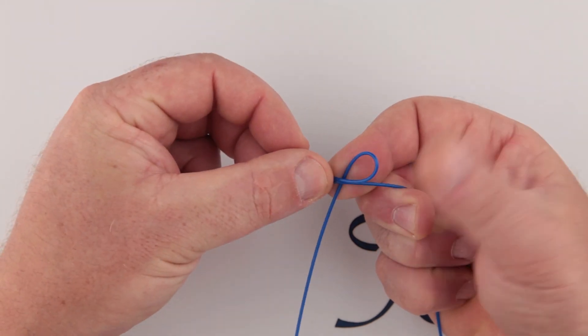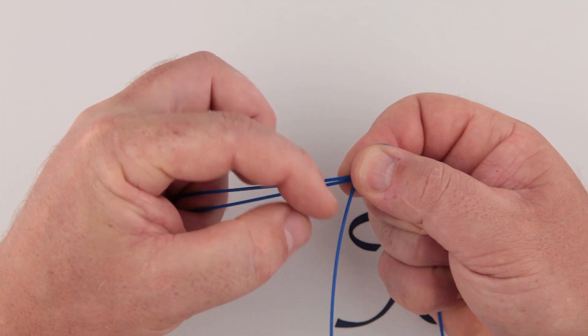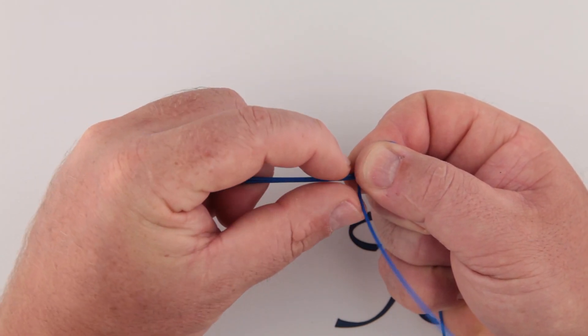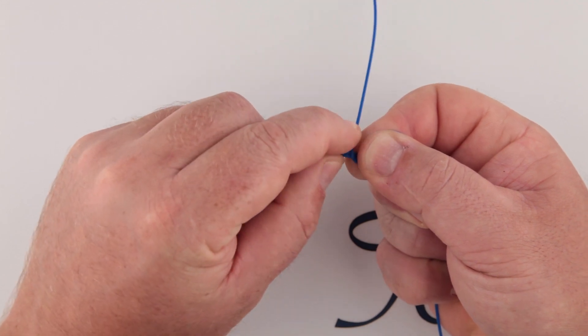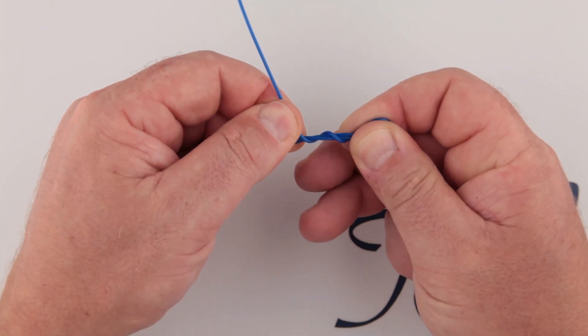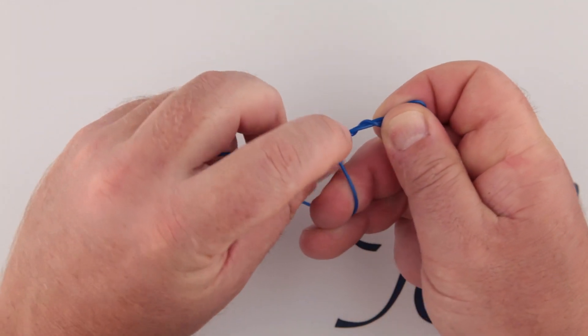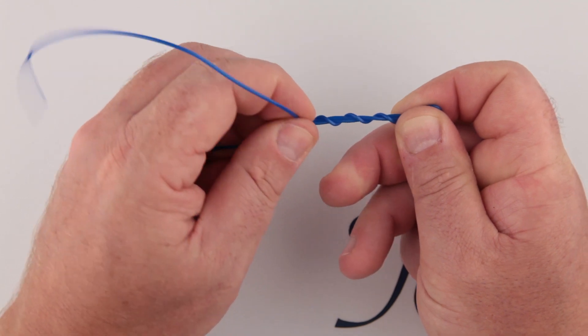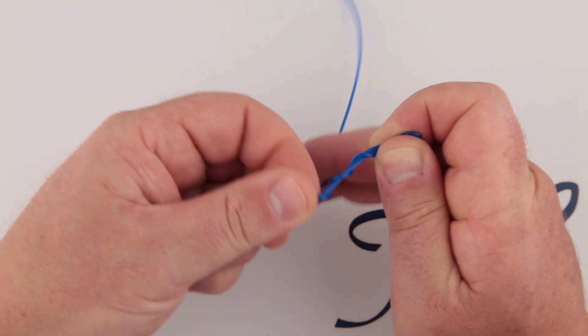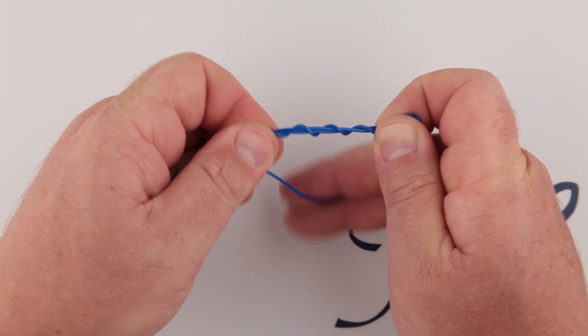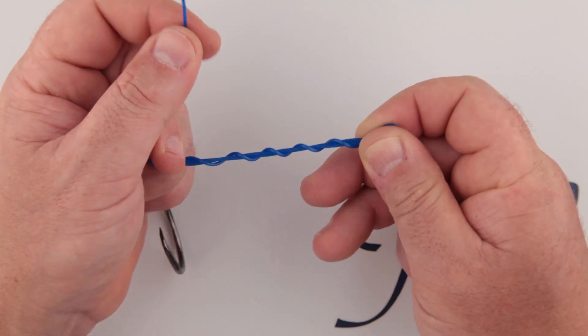Then begin to wrap the line in an anti-clockwise direction around the two lines in the center five times for now. One, two, three, four and five.